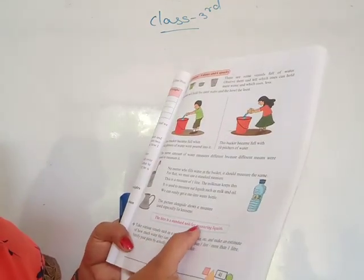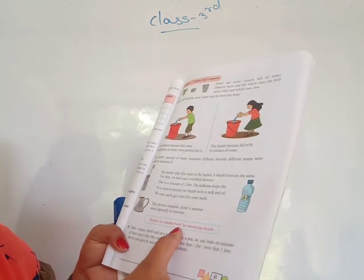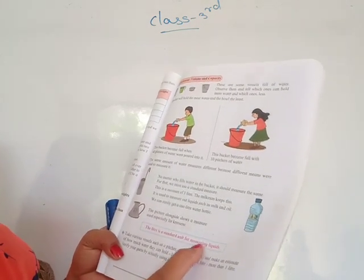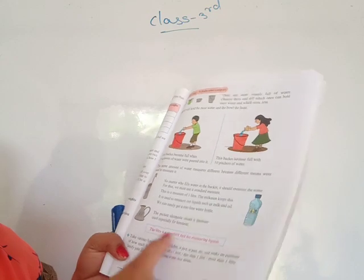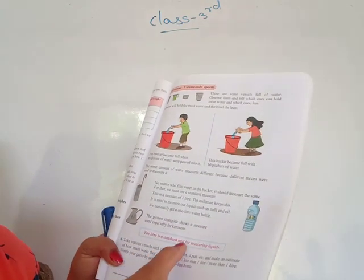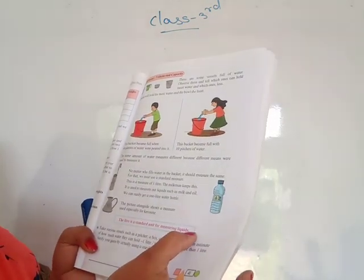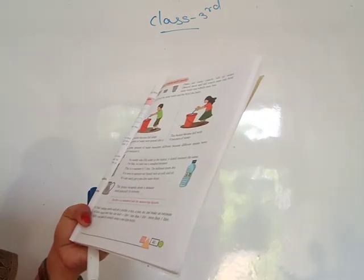This picture alongside shows a measure used especially for kerosene — also one liter — but this one is used for kerosene and the other for oil or milk. The liter is a standard unit for measuring liquids.